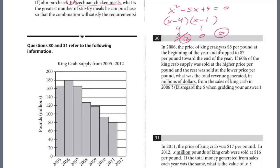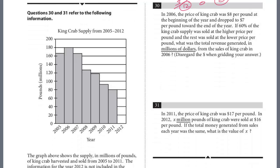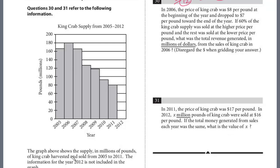All right, we're going to do the last two. This is a paired question, number 30 and 31. The graph above shows the supply in millions of pounds of king crab harvested and sold from 2005 to 2011. The information for the year 2012 is not included in the graph. So different years, we've got pounds in millions on the y-axis. And 2012 is not given. So let's take a look at the first question.